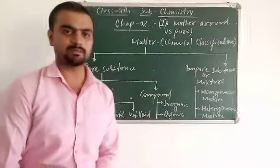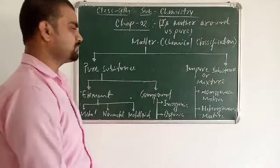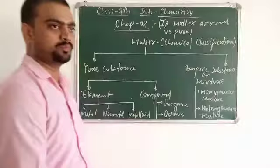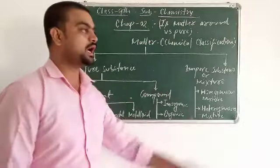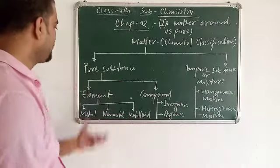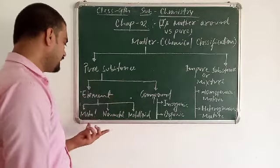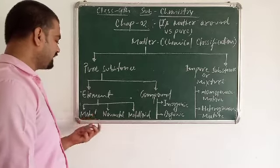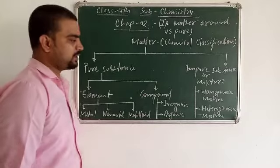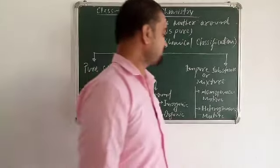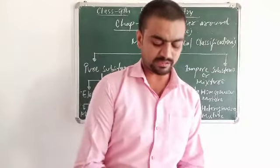So in chapter 2 we have to talk about the chemical classification of matter. Matter is classified into two parts: pure substance and impure substance. Impure substance is also considered as mixture. Pure substances are of two types — element and compound. Elements have three parts: metal, non-metal, and metalloid. Compounds have two parts: inorganic and organic. Mixtures are of two types: homogeneous or heterogeneous.